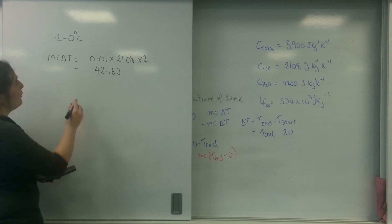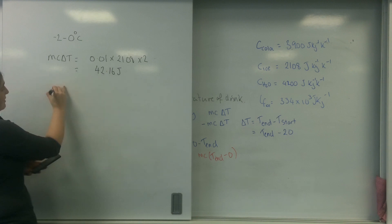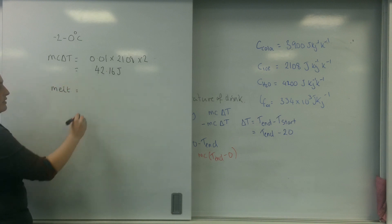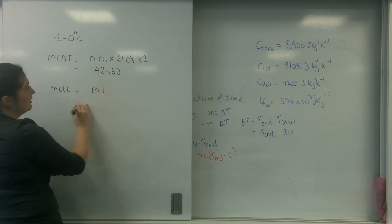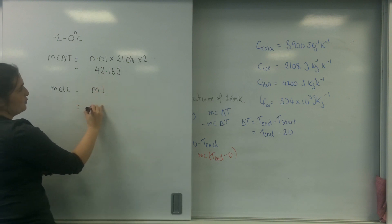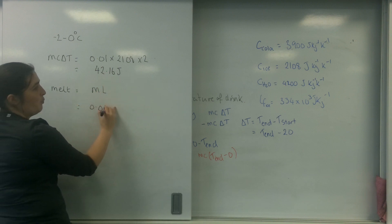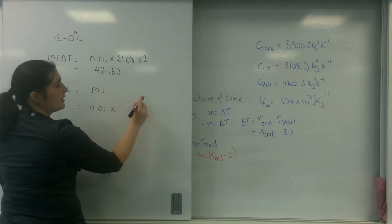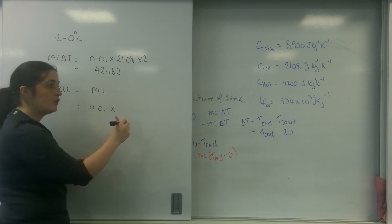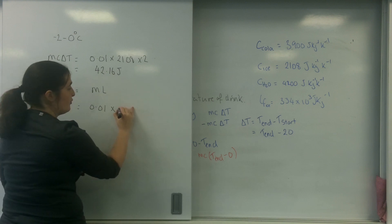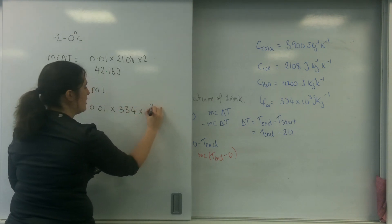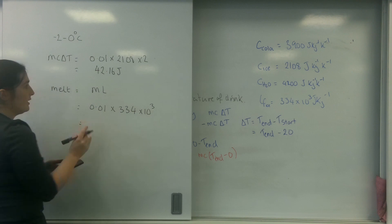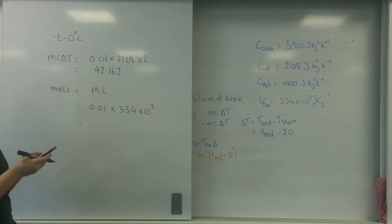The ice is now going to melt, so that's ML: 0.01 times the latent heat of fusion of ice, which is 334 times 10 to the 3.